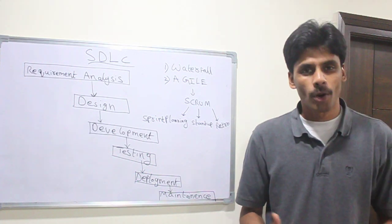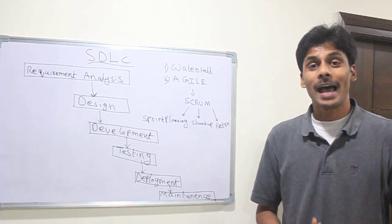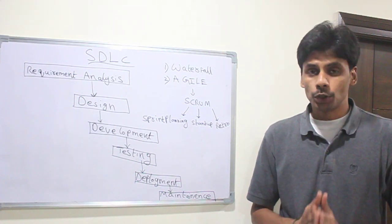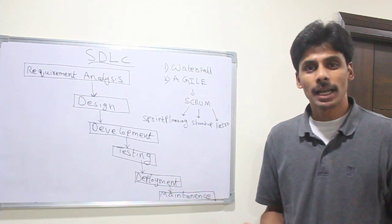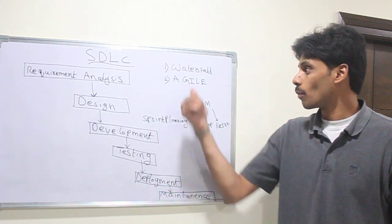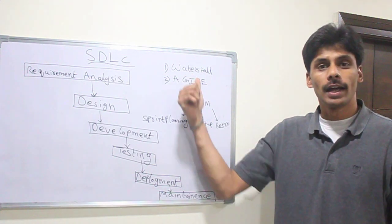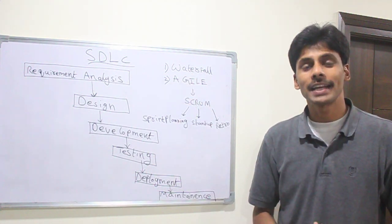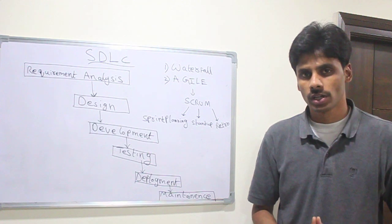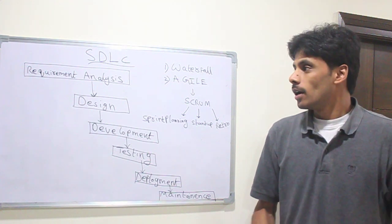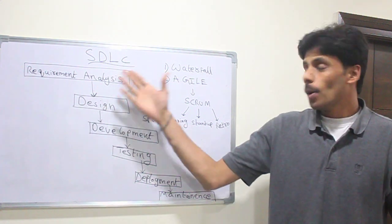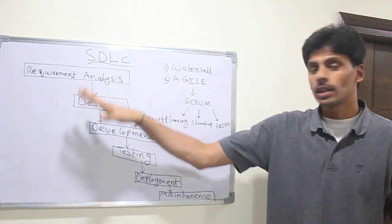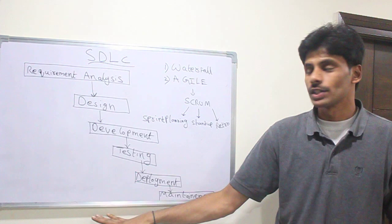Every software application or product we develop has a life cycle to it. The two famous life cycle approaches are the waterfall model and the agile approach, which is an iterative approach. No matter which model you follow, it has all the following stages.